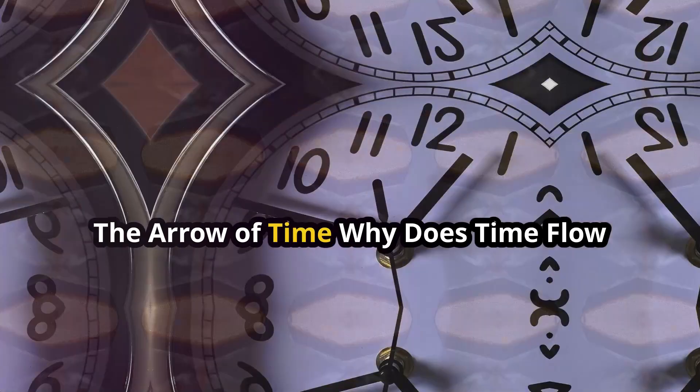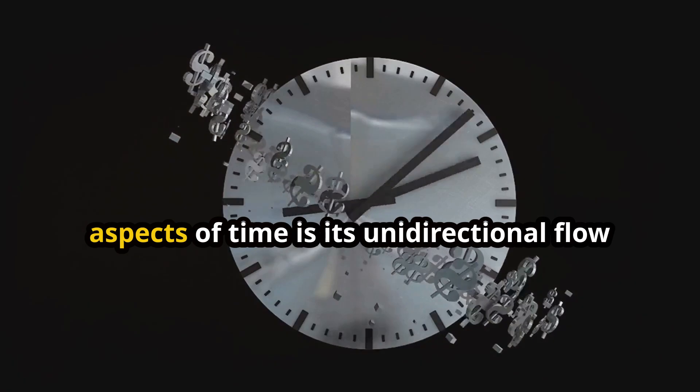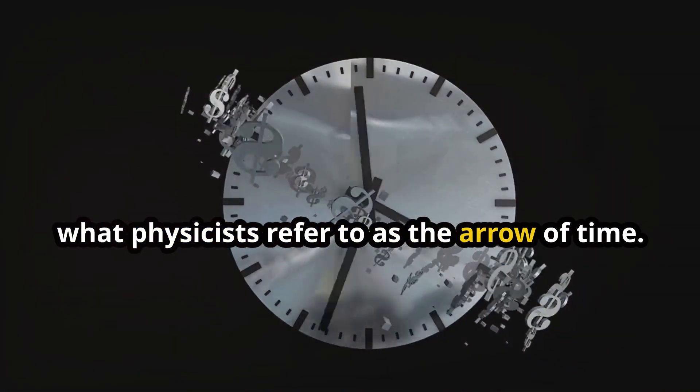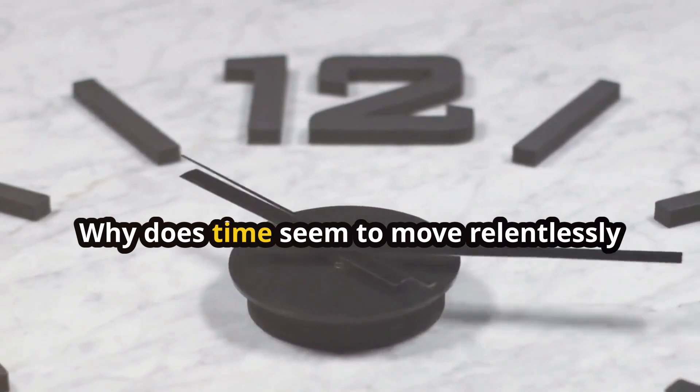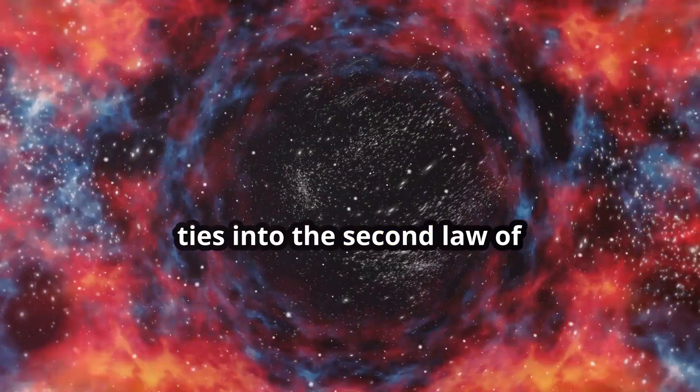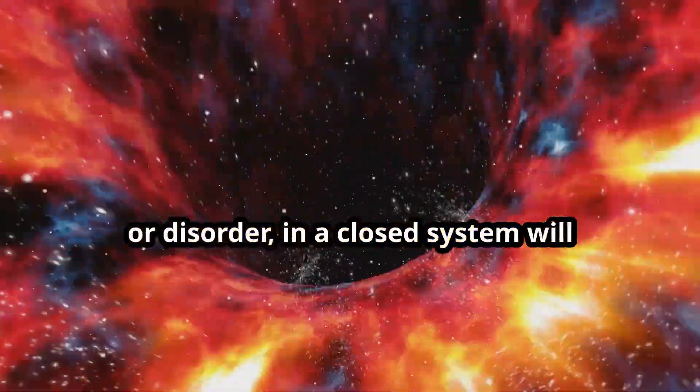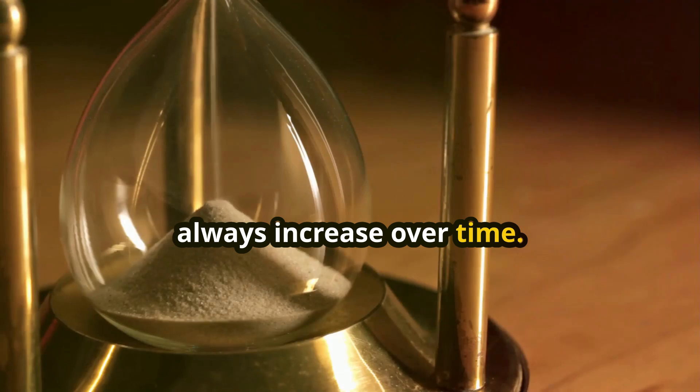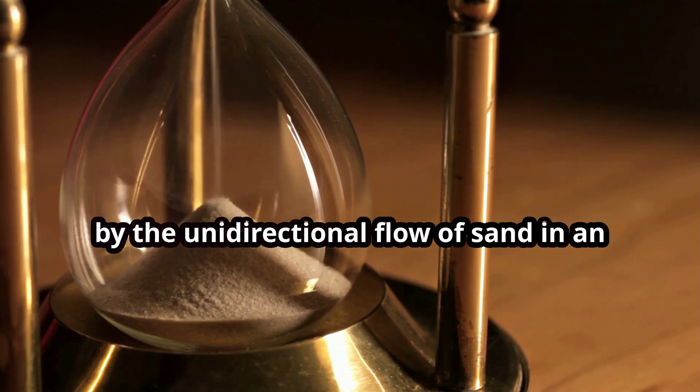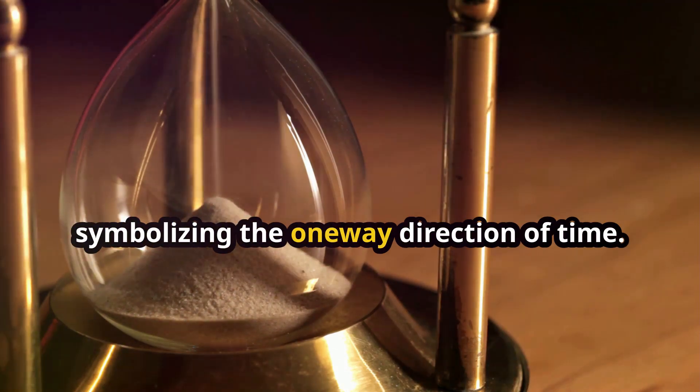The arrow of time: why does time flow forward? One of the most perplexing aspects of time is its unidirectional flow. We always move forward into the future, never backward. This question ties into the second law of thermodynamics, which states that entropy, or disorder, in a closed system will always increase over time. The entropy of a system, illustrated here by the unidirectional flow of sand in an hourglass, inevitably increases, symbolizing the one-way direction of time.